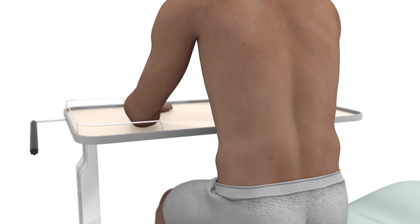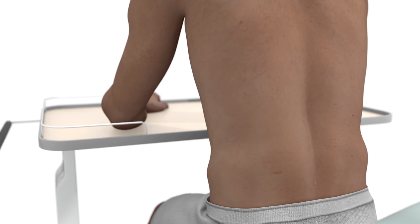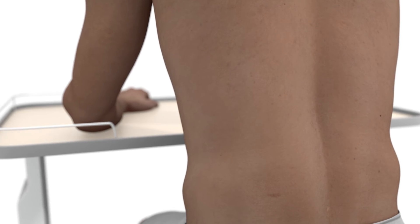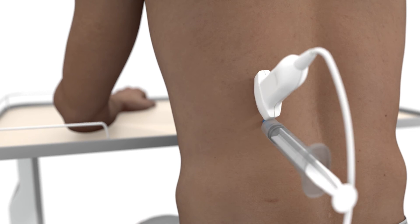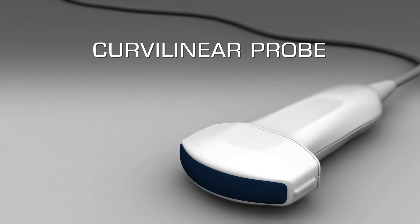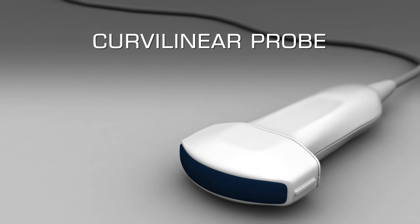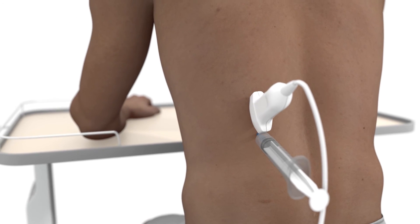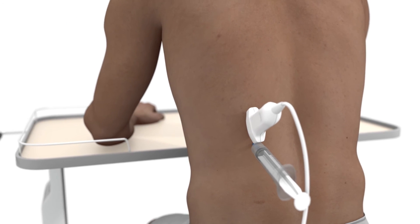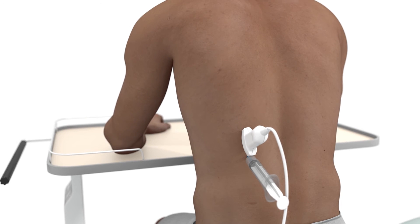The percussion technique of localizing pleural effusion is not 100% reliable. Ultrasound guidance of thoracentesis results in an improved success rate while reducing the rate of complications. A curvilinear low frequency transducer is ideal for this procedure. The preferred position is to have the patient sitting upright, often leaning forward on a bedside table.